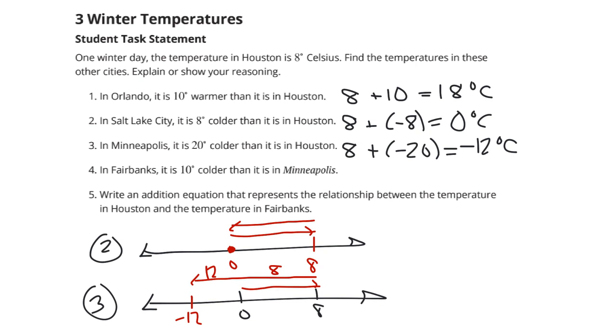Number lines can help to solve these. In Fairbanks, it is 10 degrees colder than it is in Minneapolis. Be careful to read that question. We have Minneapolis, which was negative 12 degrees, plus 10 degrees colder. So, negative 10 equals what? For those of you who need a quick geography here, that's in Alaska. We're at negative 12 with Minneapolis. And now we're going to get 10 degrees colder, which is going to result in negative 22. So, now we're at negative 22 degrees Celsius for Fairbanks.